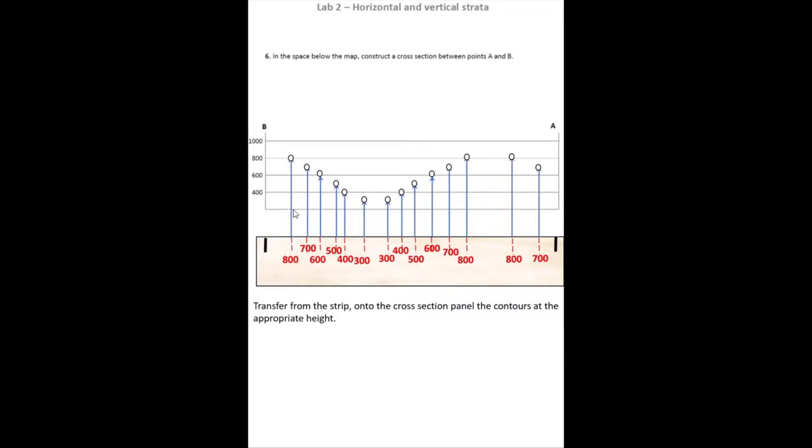So on my cross-section panel, I mark on a point at 800 meters. I do that for all of the other ground contours that I cross.